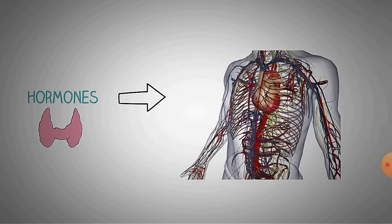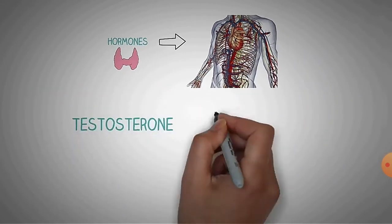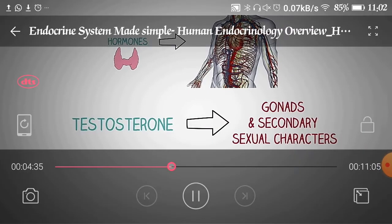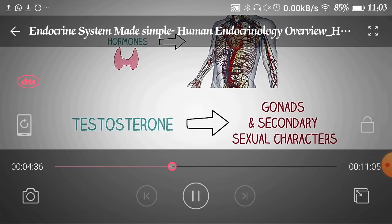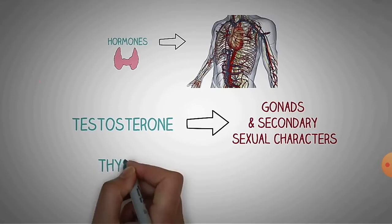Thyroid hormones are responsible for various metabolic processes — metabolism of carbohydrates, proteins, and fats. They are also responsible for releasing various enzymes and controlling menstruation. Testosterone acts on the male gonads; in females it is available in very small quantities. Testosterone is responsible for secondary sexual characters and development of the testes.